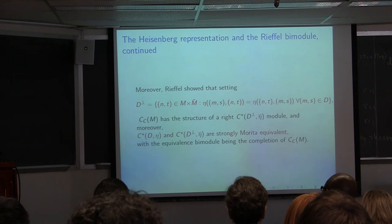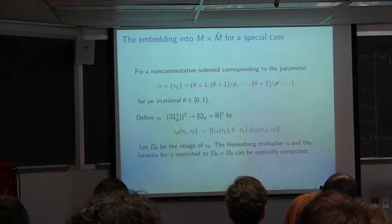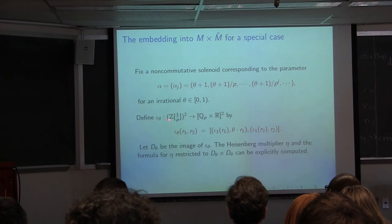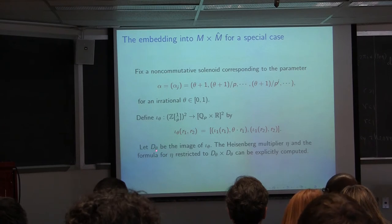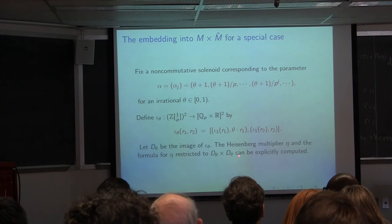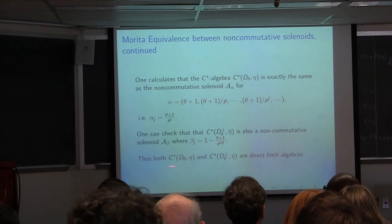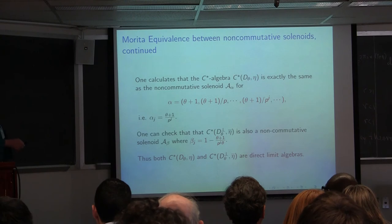In our case we constructed a family of embeddings. Fix θ and take the multiplier corresponding to θ, θ+1/p, …, θ+1/p^j, and define the embedding of Z[1/p]² into (Q_p × R)² — call the image D_θ. When you compute the Heisenberg multiplier on D_θ × D_θ, it corresponds to the multiplier on our non-commutative solenoid. Furthermore, C*(D_θ^⊥, η̄) is also a non-commutative solenoid; both are direct limit algebras and you can explicitly write out the direct limit bimodules between them using the p-adic structure.